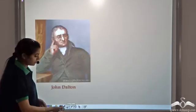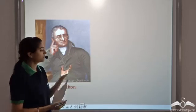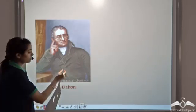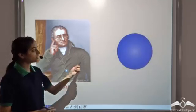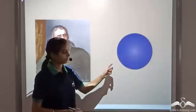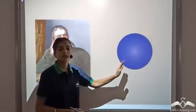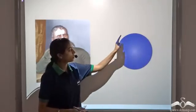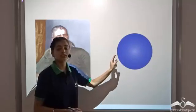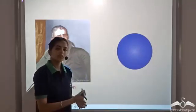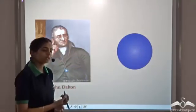The first scientific theory about atoms was given by a scientist named John Dalton. He said that atom is a solid hard sphere. It is neutral, that is it has no charge on it. So according to Dalton, an atom is a solid hard sphere. He gave some other points about the atoms.